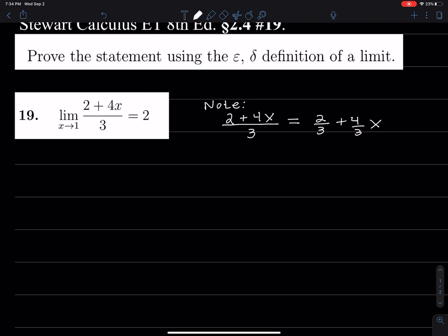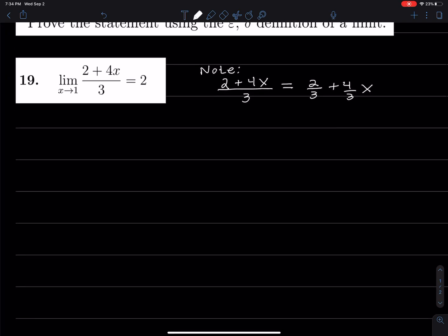And so what we're trying to do is we want to show that the limit as x approaches 1 of (4/3)x + 2/3 equals 2.